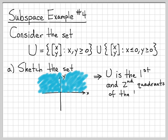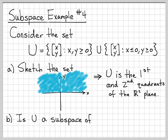U is really just the first and second quadrants of the 2D plane — all points in R² in those two quadrants. Now we want to figure out: is U a subspace of R²? Subspace means something very specific. Obviously U is a subset of R² since R² is the whole plane. To check if U is a subspace, there are three things we need to verify: the zero vector must be present, the set must be closed under vector addition, and it must be closed under scalar multiplication.